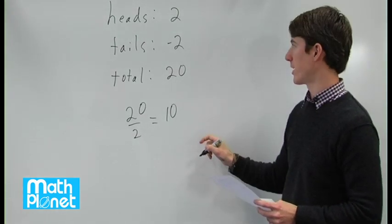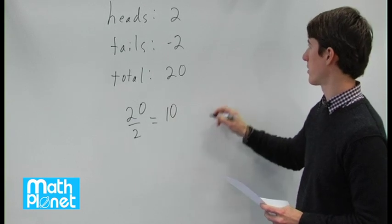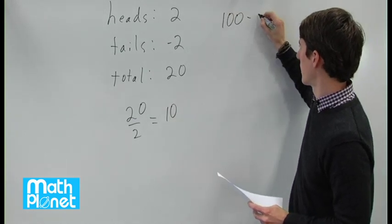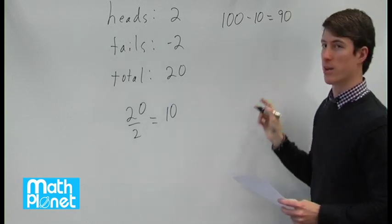So that means of the remainder, so this is 10 tosses for heads, we have 100 minus 10. There were 90 other tosses.